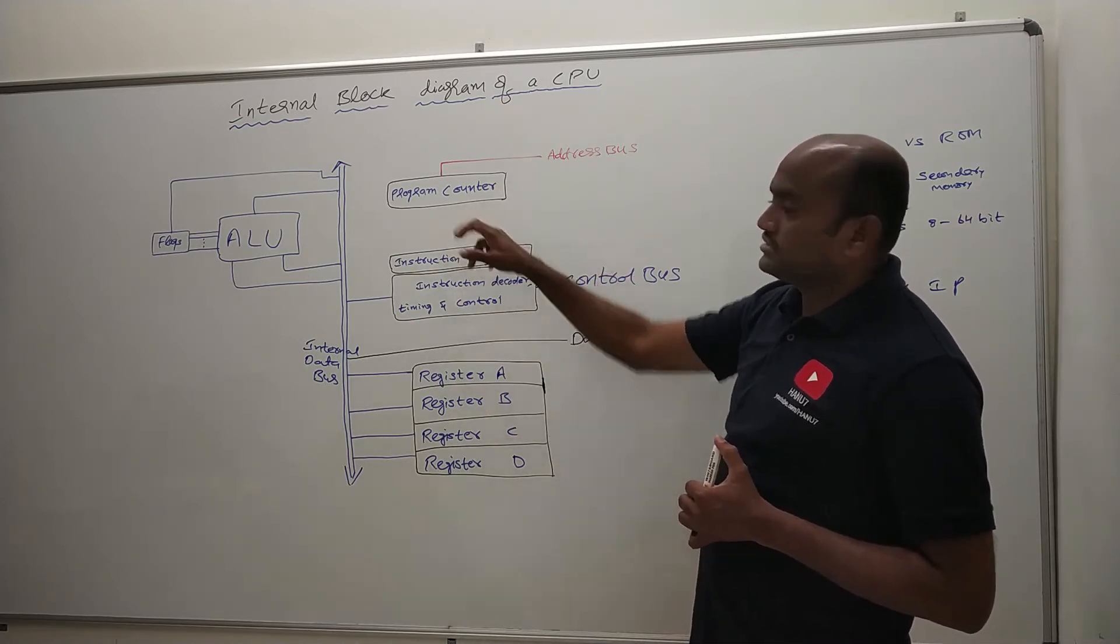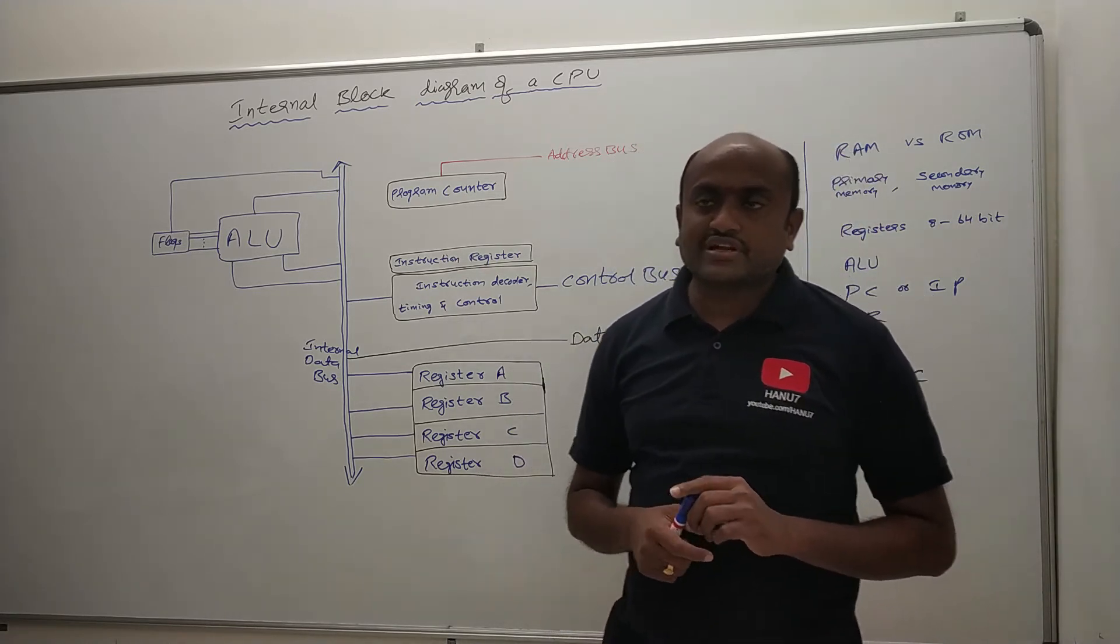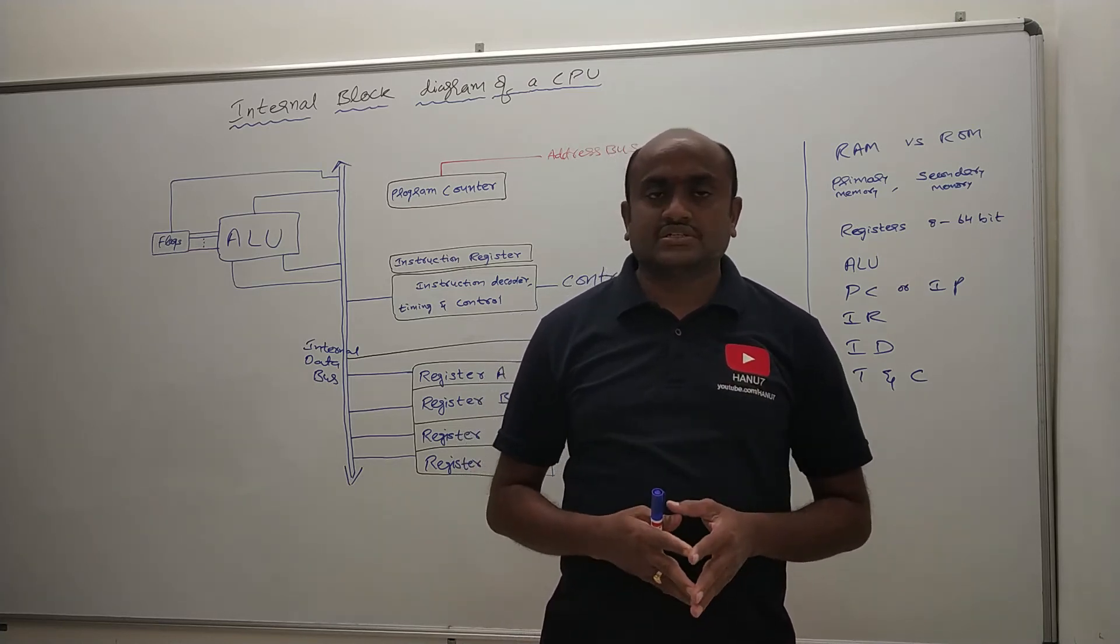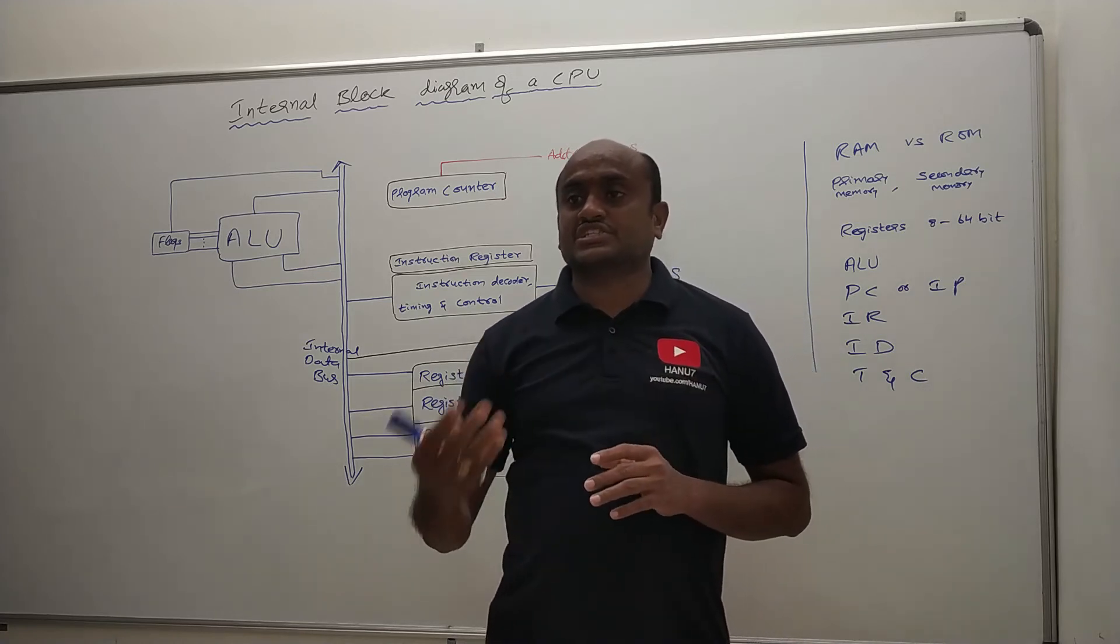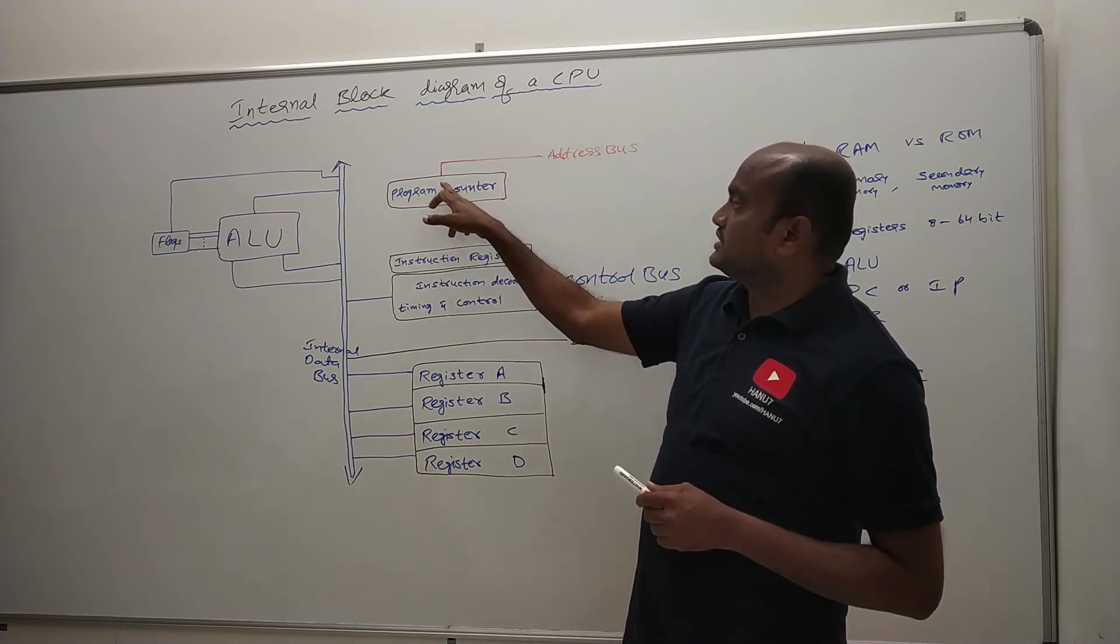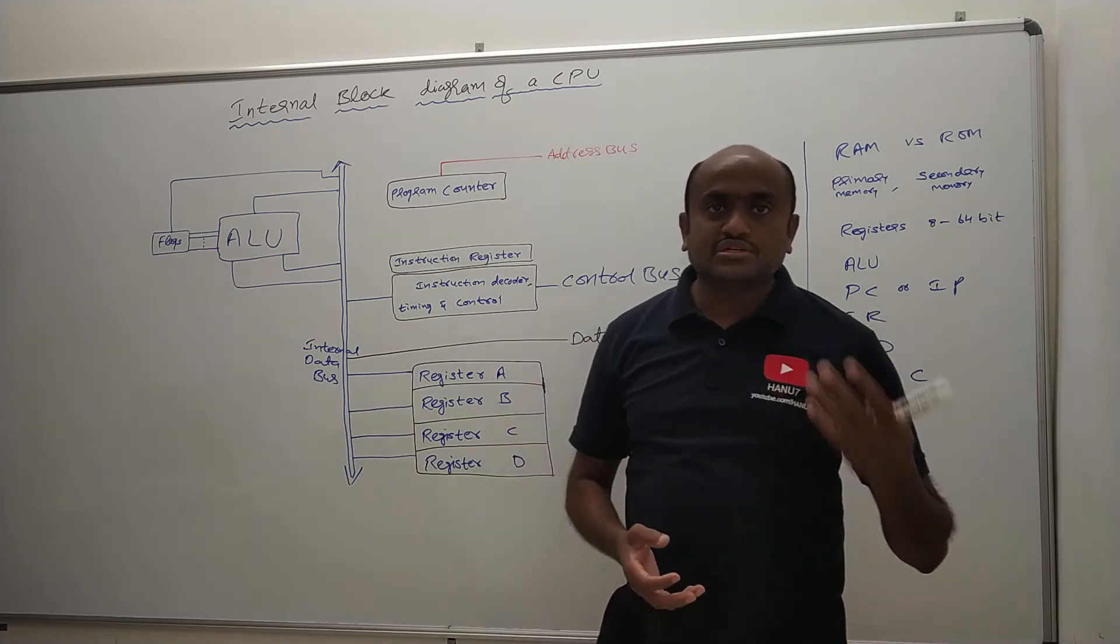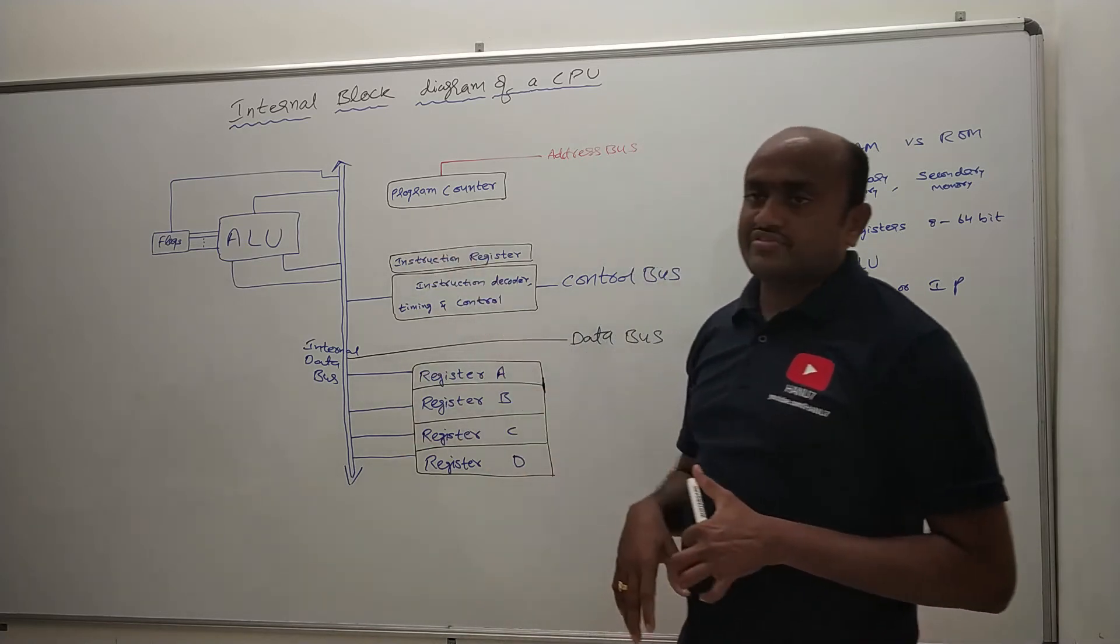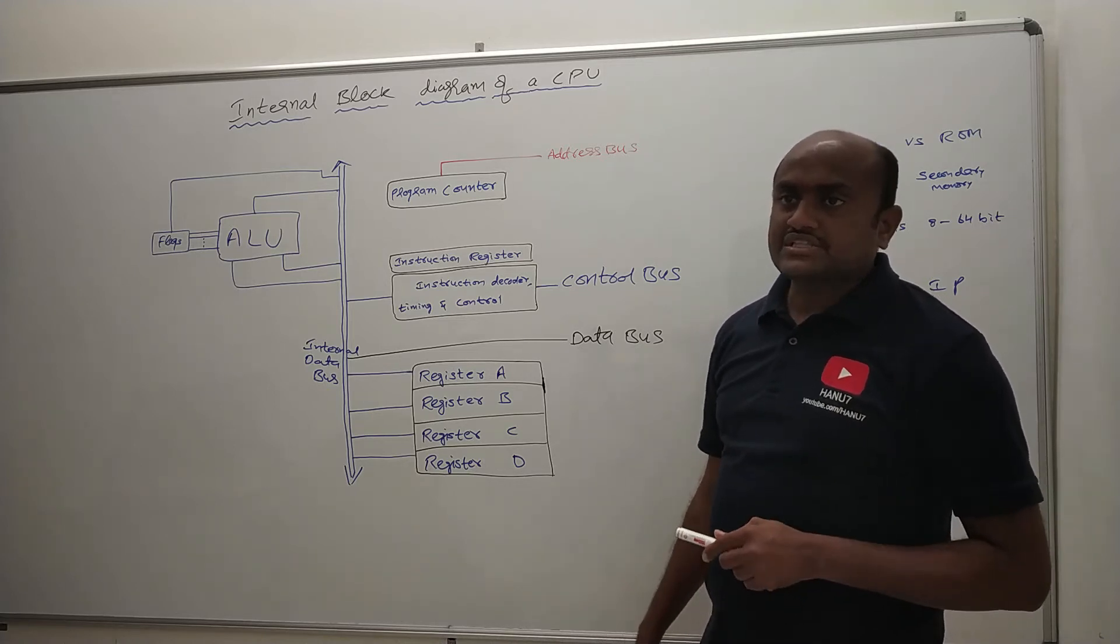So here you can see there is a program counter. We already know that what is the use of the program counter. Program counter will always point to the address of next instruction. So it is pointing to the address of next instruction. So that is why it is connected to the address bus. So it will just give the information to the address bus that what is the next address it has to read or it has to write to.